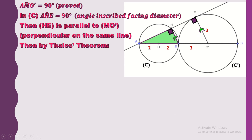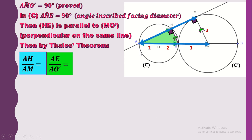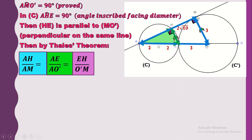Since HE and MO prime are parallel, we can apply Thales' theorem. These two parallel lines are cut by intersecting transversals. We can write: AH over AM equals AE over AO prime equals HE over MO prime. To find AH, we use the fraction containing AH along with another fraction whose lengths are known. AE equals 4 cm and AO prime equals 7 cm, and AM equals 2√10, which we just proved.